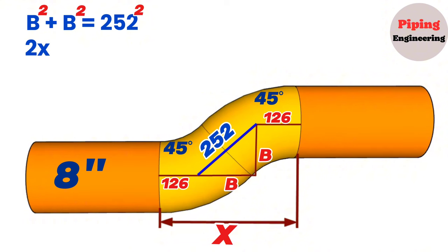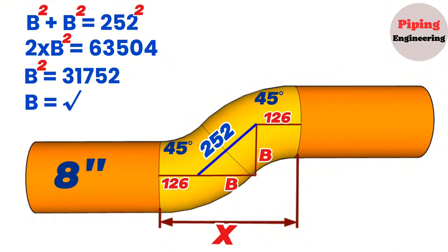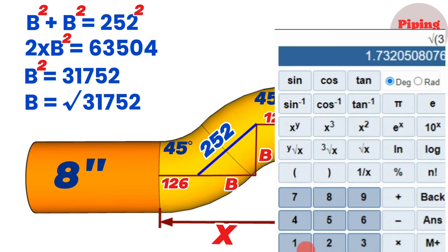Continuing to calculate, 2 times B squared equals 63,504. We continue to calculate, to find B more easily, B squared equals 31,752. B will equal the square root of 31,752. At last, we will use a scientific or phone calculator and find B equals 178 millimeters.